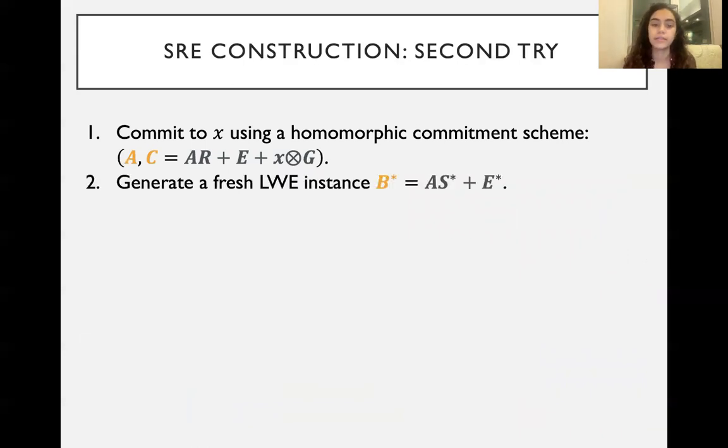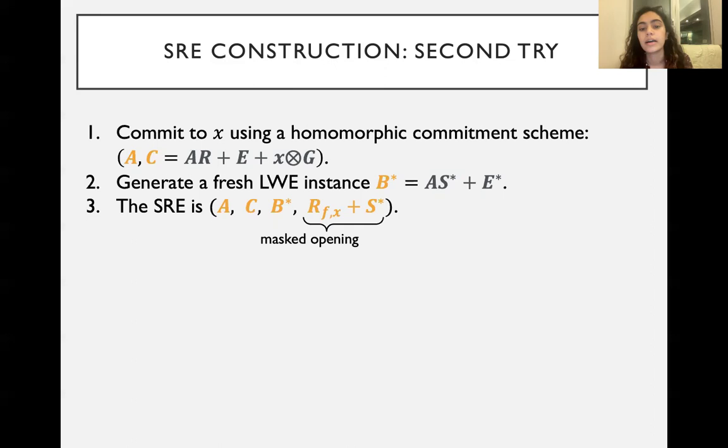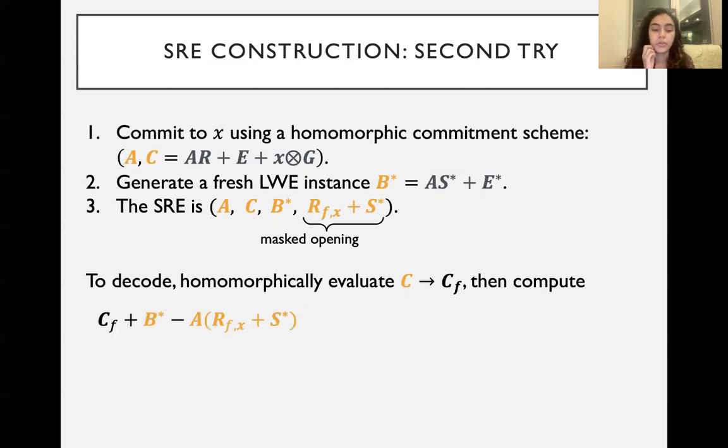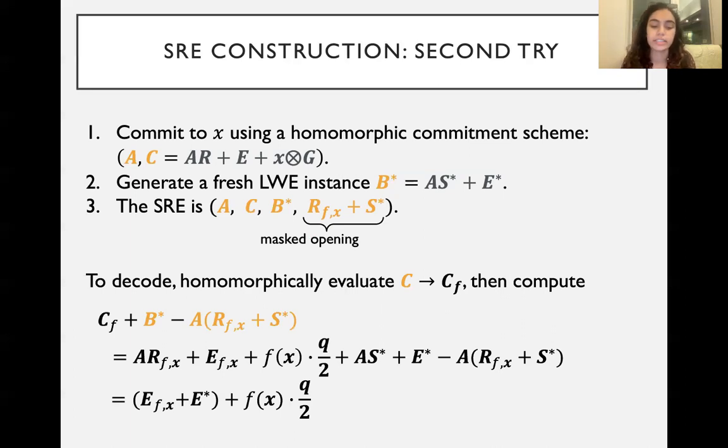So what are we going to do? Again, committing to x using the homomorphic commitment scheme. What if we now also generate some new LWE instance, B*, in terms of the same A as in our commitment? So we'll have B* is equal to AS* plus E*. In this ideal world, this is basically just a straw man. We're thinking of S as being random and E as being Gaussian, like how we would really want an LWE sample to be. The SRE will be A, C, so it's the same as before, B*, so that's new - we're adding that into the SRE now, and then R_f(x) plus S*. So the point of this here is that we're going to basically mask any information that R_f(x) might leak by adding the truly random S*. To decode, you start by homomorphically evaluating C to get C_f, then you add B*, and subtract A times R_f(x) plus S*. This basically works out to what you would expect, and eventually you get that all of the terms except for the errors cancel, and then you can just round to recover f of x.